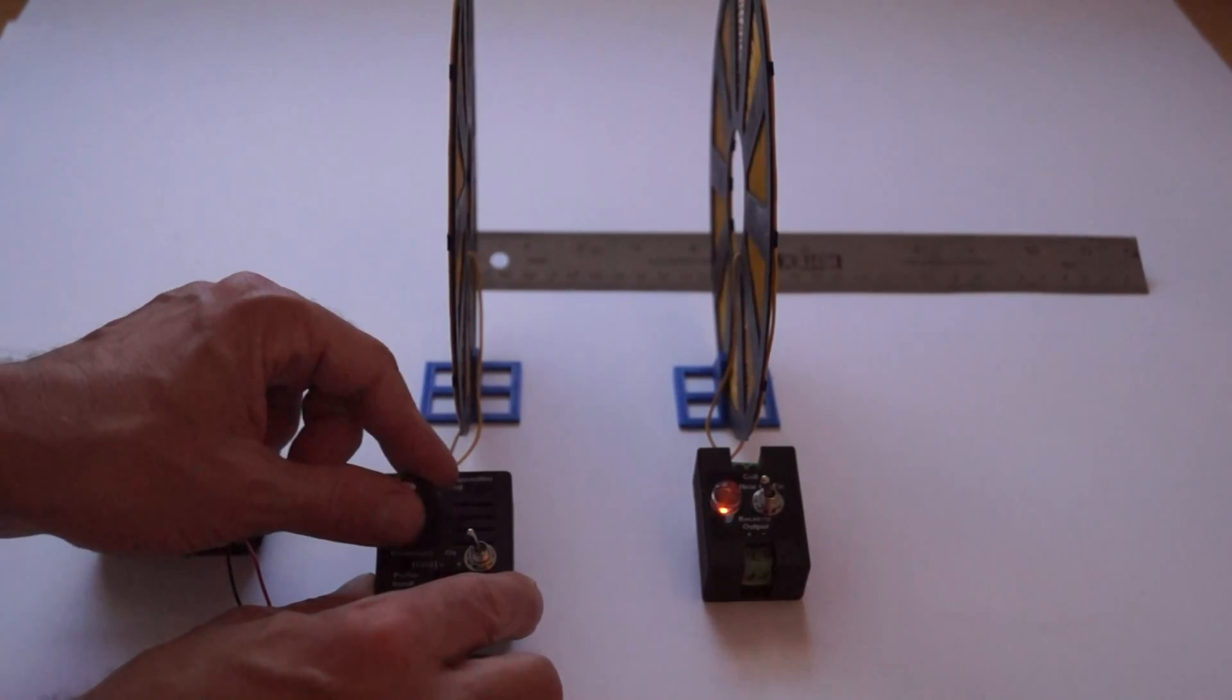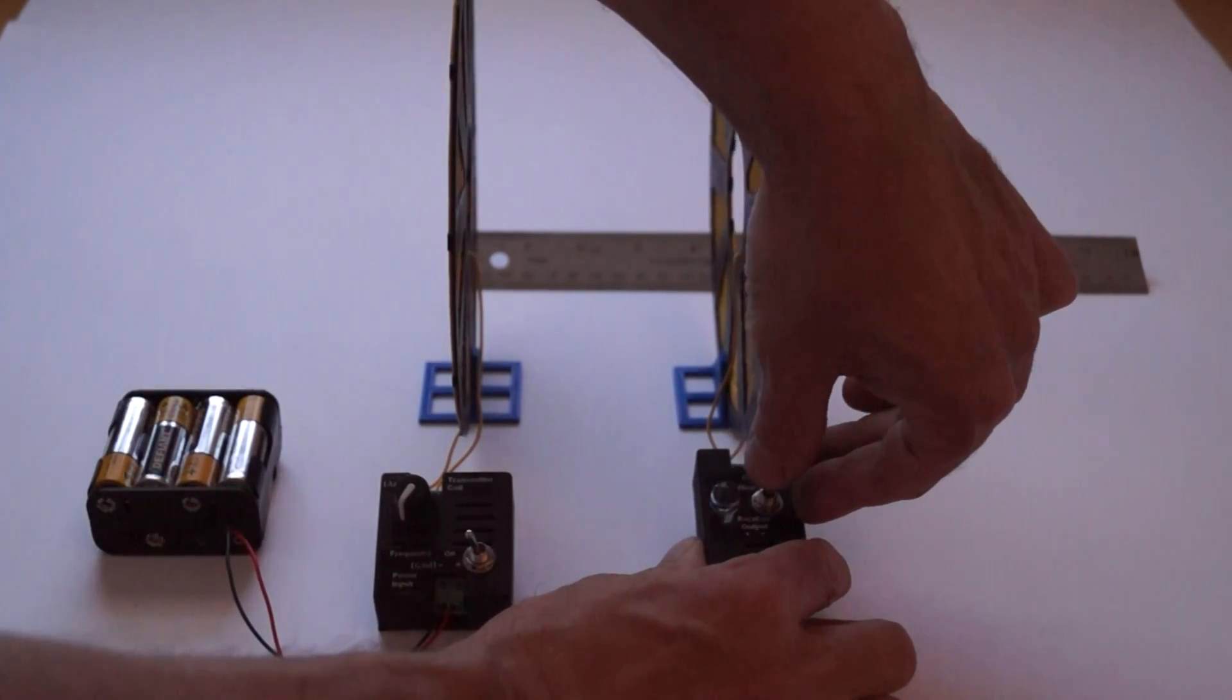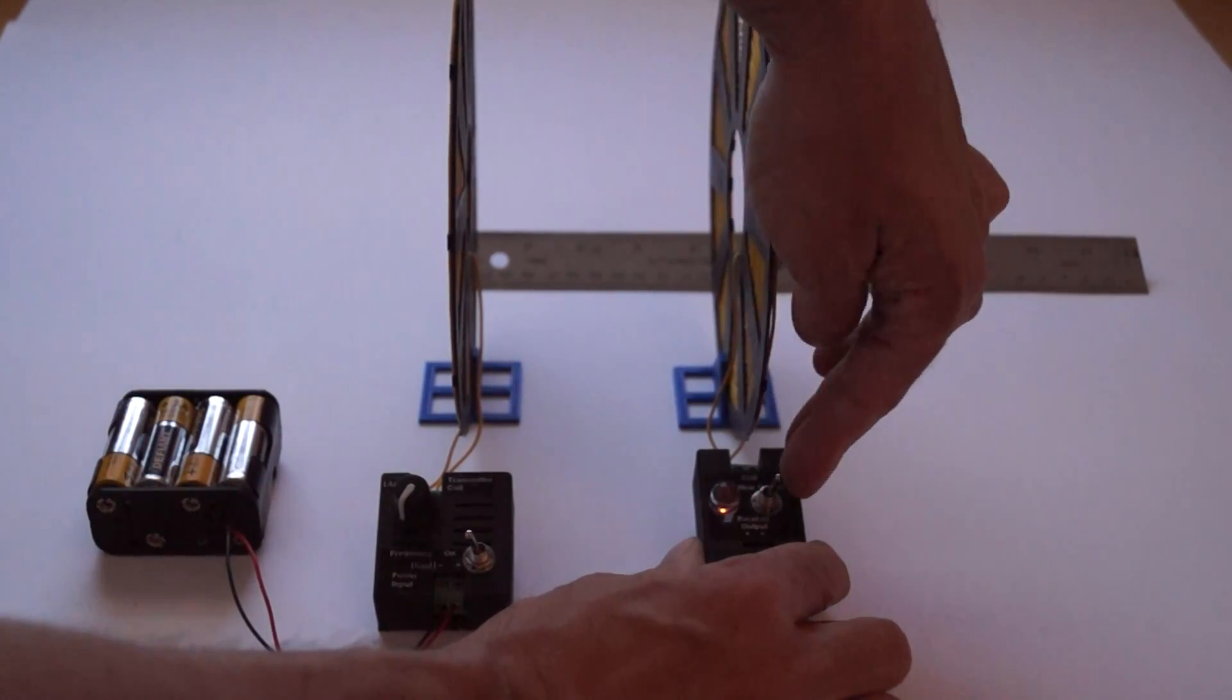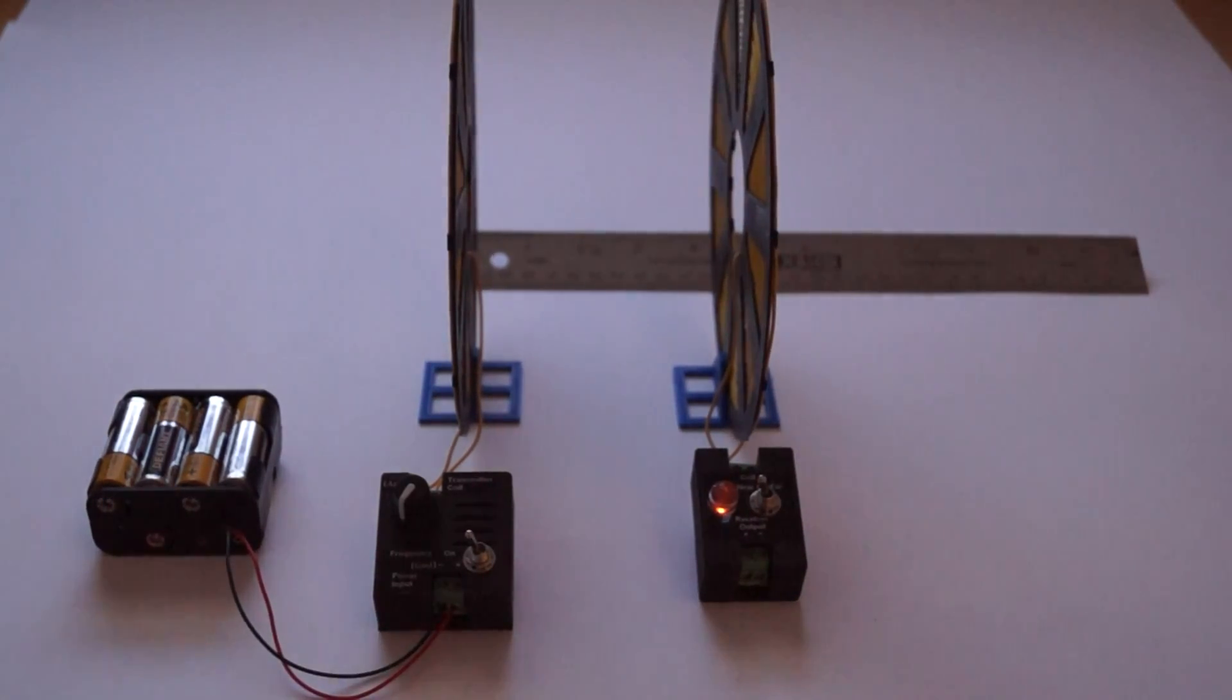The receiver LED has three positions. Near for when the coils are less than 12 inches apart. Far for over 12 inches. And off when no LED loading is desired.